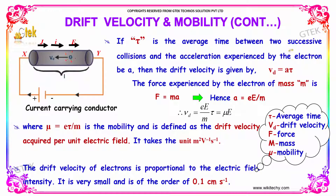If tau is the average time between two successive collisions and A is the acceleration experienced by the electron, then the drift velocity is given by Vd equals A times tau. The force experienced by the electron of mass M is F equals MA, hence A equals eE divided by M. So the drift velocity Vd equals A times tau, which equals (eE/M) times tau, equal to mu times E, where mu equals e times tau divided by M. This mu is the mobility, defined as the drift velocity acquired per unit electric field.